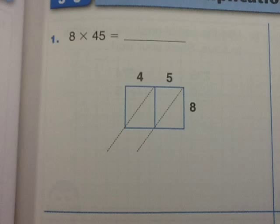Hello, third graders. I'm going to show you how to do the lattice method of multiplication. So here you can see we have 8 times 45. 45 would be on top, and 8 is on the side.